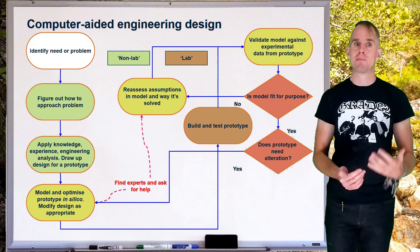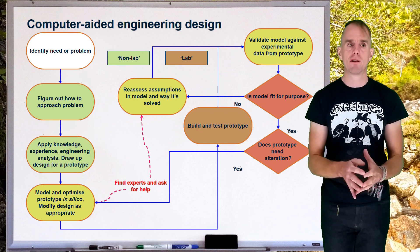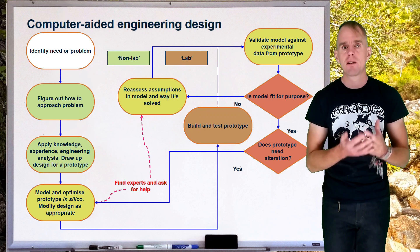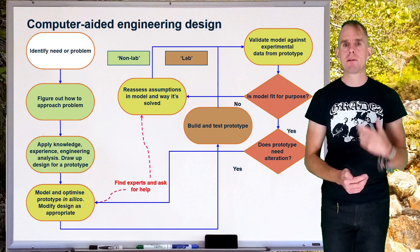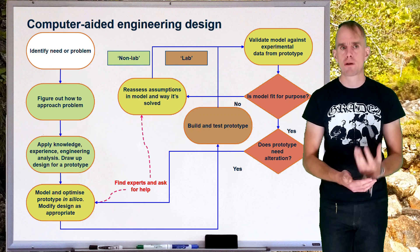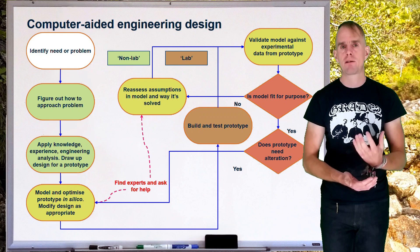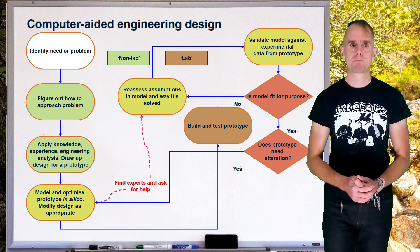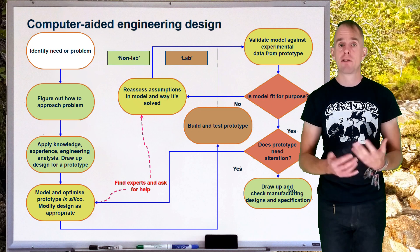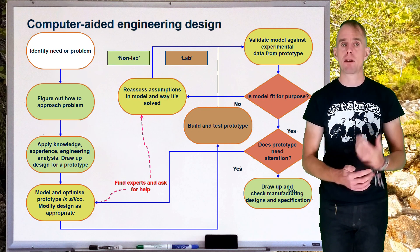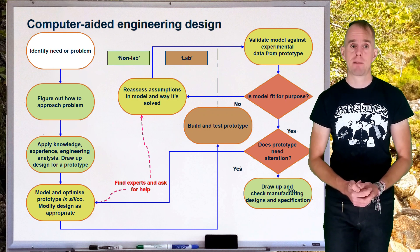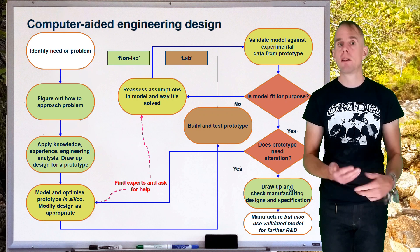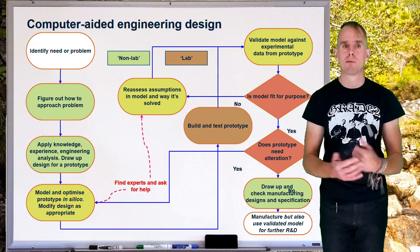Then, we ask the question, does the prototype need alteration? Is the prototype doing what the design requires it to do? And if not, at this point, we can go back to our now validated model and go and optimize our prototype such that it does perform in the way that we want to do it. However, this step is completely nonsensical if we don't trust our model. And again, this all hinges on successful validation, successful match between the prediction of the computer and the results from experimentation. So, once we're happy that we've got a successfully validated model, we can draw up our final design for the manufacturer, and we can give those specifications to a fabricator. And ultimately, we end up with our manufacturer of our prototype, but we also end up with a validated model that we can use for further research and development work, which is a very powerful tool to have at your disposal.